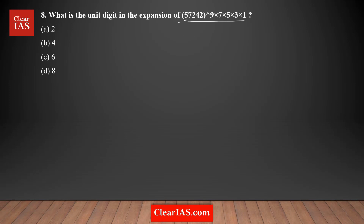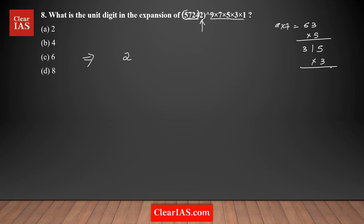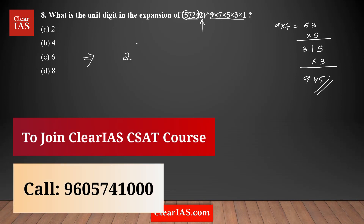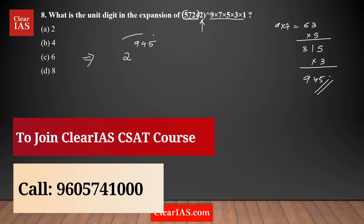I'm going to apply this rule to the main question. The question asks you to calculate the unit digit of this expansion. The numbers 5, 7, 2, 4 — most of these are not affecting the unit digit of the final product. Only the 2 is affecting it. So the unit digit of the final product is the same as 2 to the power of 9 × 7 × 5 × 3, which equals 63 × 5 = 315 × 3 = 945.